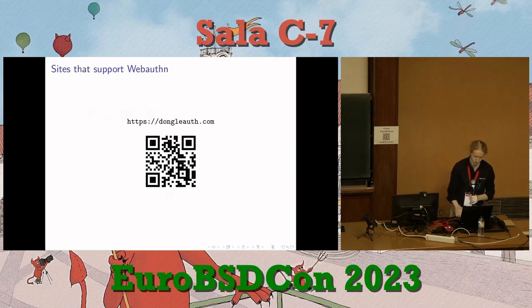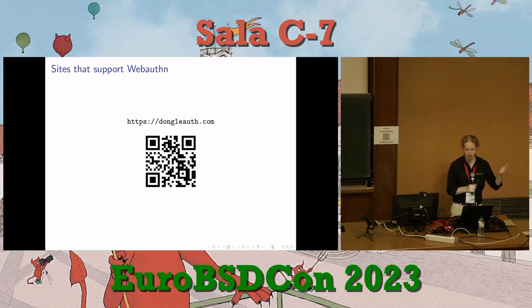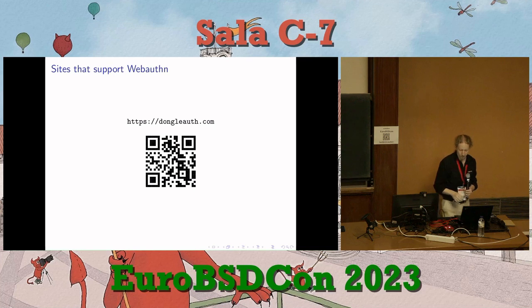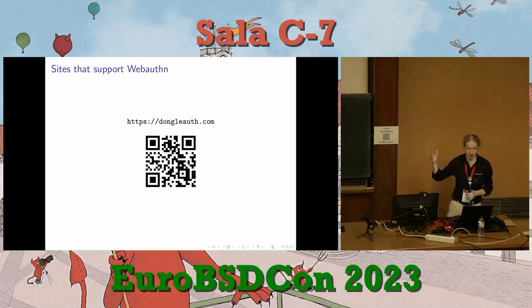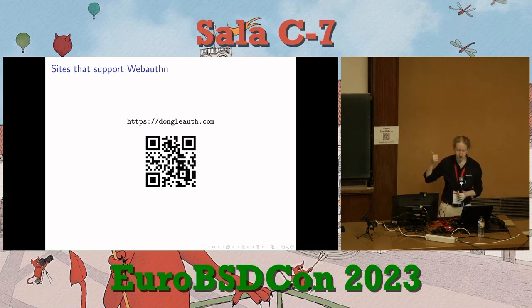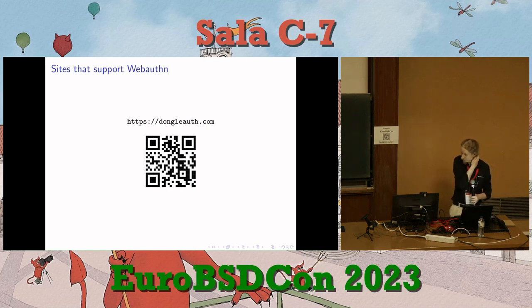There's a list of sites that support WebAuthn for login — Google, Facebook, Twitter, some banks, various hosting providers. There's a big list of sites that do and don't support WebAuthn that you can reference, with a Git repository on GitHub where you can submit a pull request if you know a site supports it. This particular list specifically highlights FIDO WebAuthn, as opposed to other lists that just talk about general 2FA, which is not as useful for anti-phishing.